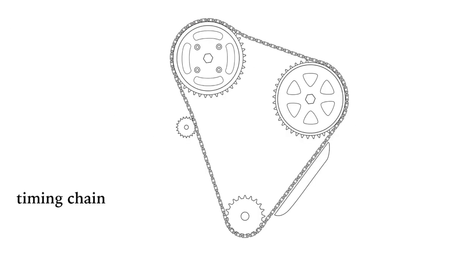A timing chain has the flexibility of a timing belt but will last a lot longer. However, it also needs to be lubricated with engine oil.